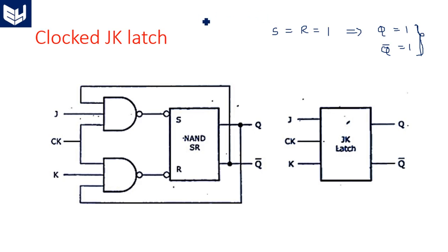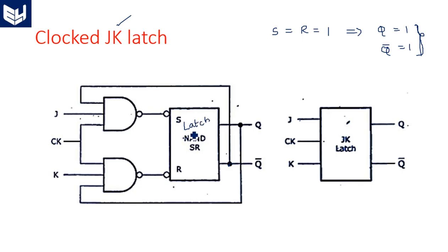To avoid this drawback, we use the JK latch. In JK, we have the same circuit but additionally we have considered a feedback from the output. Q bar is connected as the third input for the upper NAND gate, and Q is connected as the third input for the lower NAND gate. Except for that, everything else is common with what we studied previously. One NAND gate has three inputs: J, the clock signal, and the feedback.